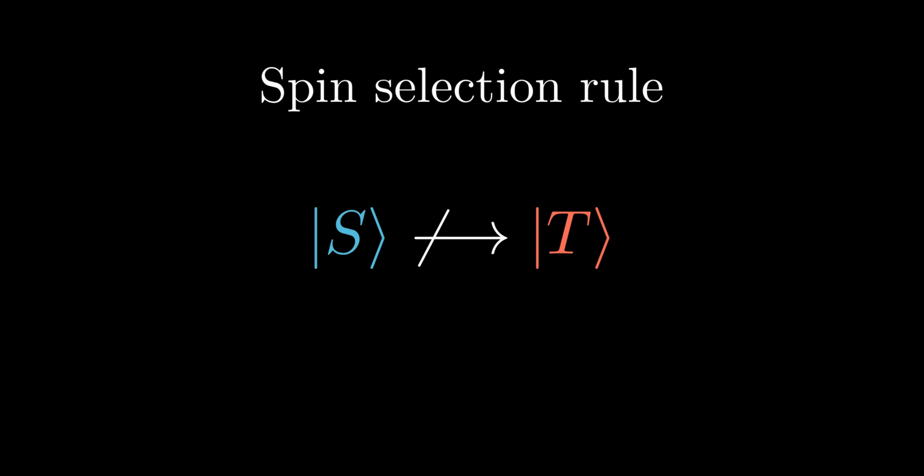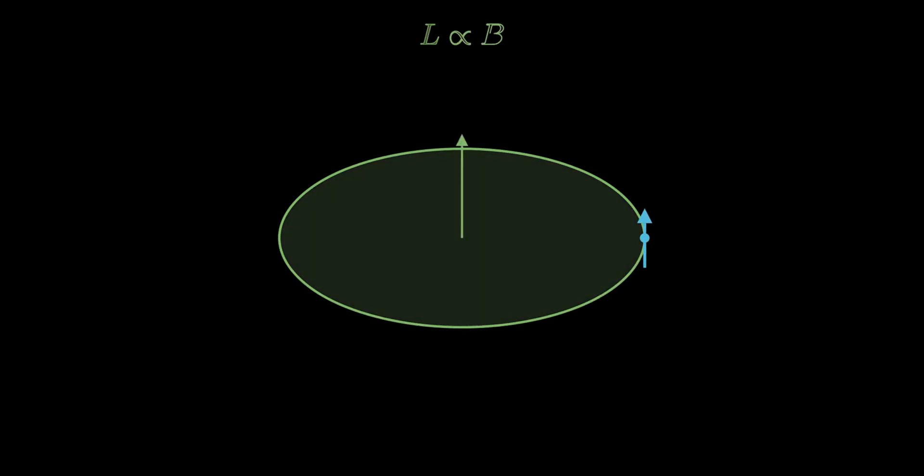However, there's a complication. Electrons behave like tiny magnets due to their spin, and their orbital motion generates a magnetic field. This field interacts with the electron's magnetic moment, leading to spin-orbit coupling.